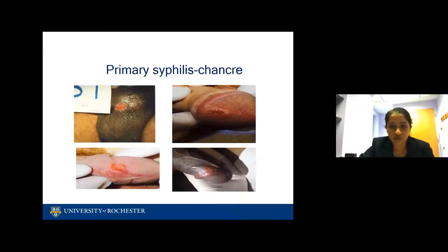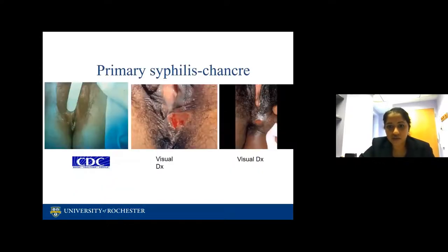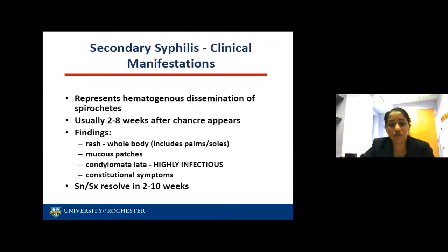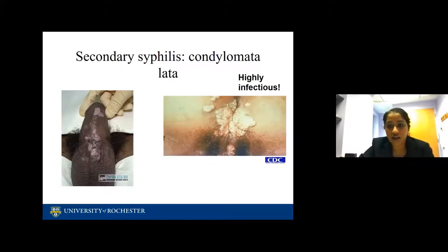These are pictures of some of the chancres — I place them here because I want you to be able to recognize them. Secondary syphilis: clinical manifestations are more disseminated. The spirochetes have now spread all over, and it usually takes two to eight weeks after the chancre appears. You see maculopapular rashes all over the body, especially the palms and soles, mucosal patches, and condyloma lata, which is highly infectious. It also presents with constitutional symptoms, and signs and symptoms resolve in two to ten weeks.